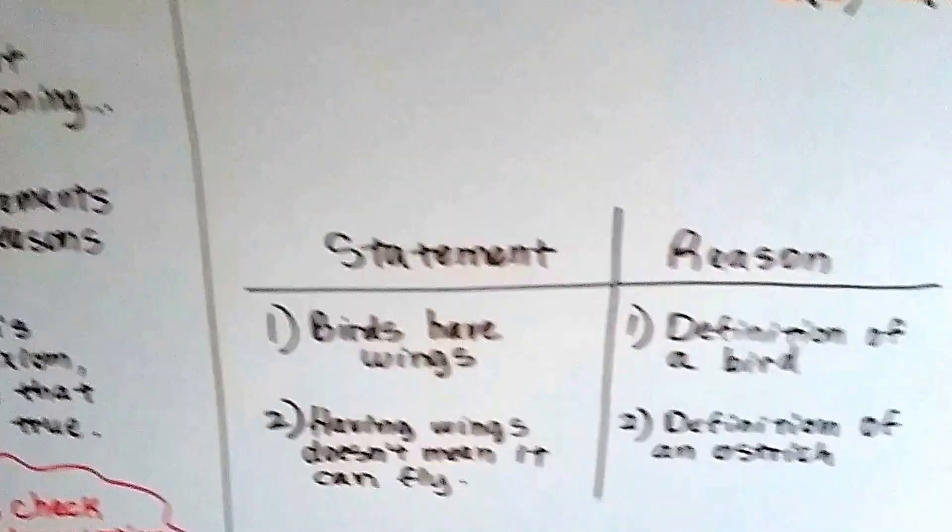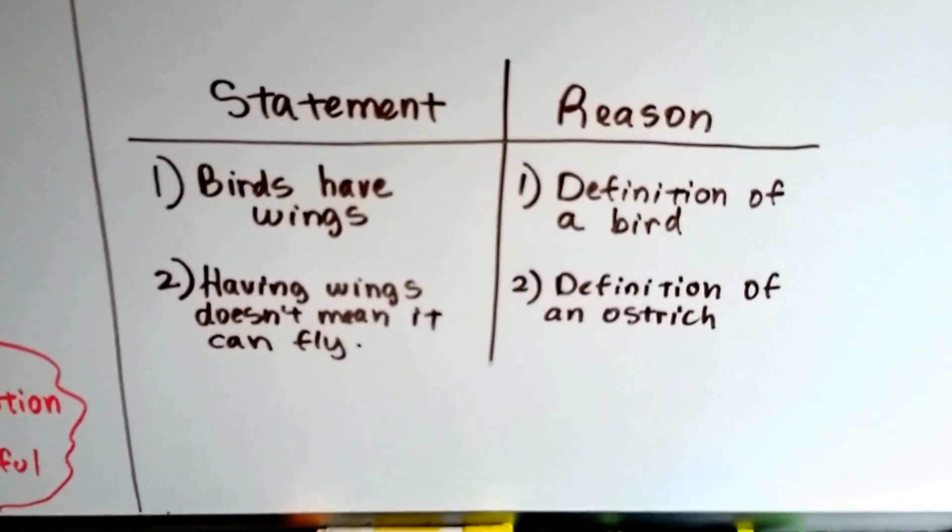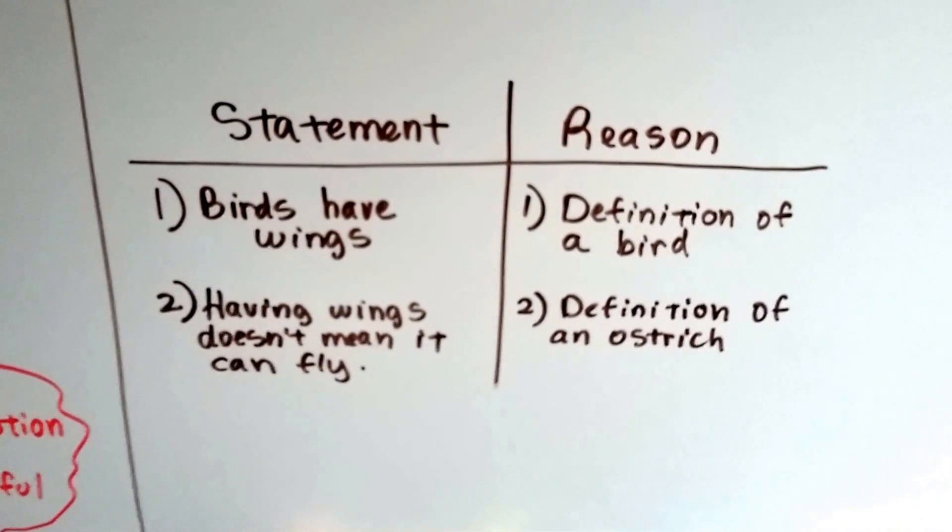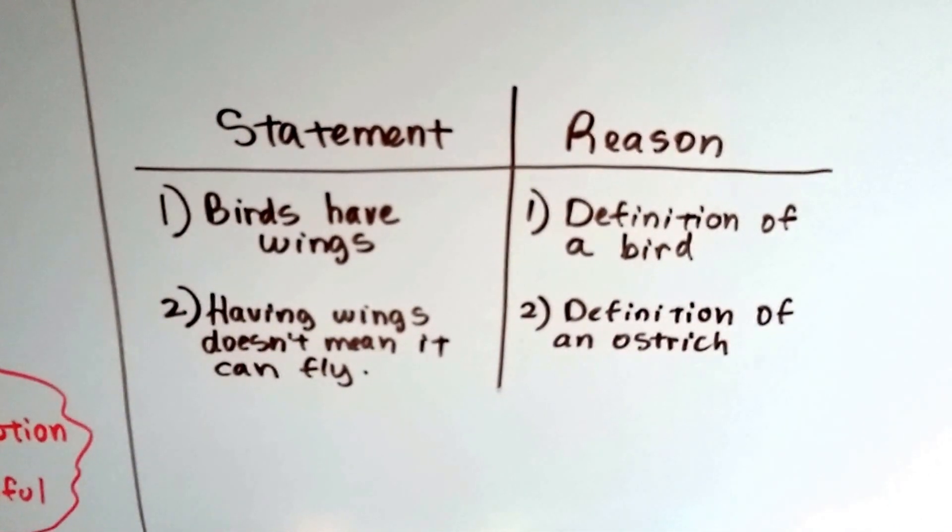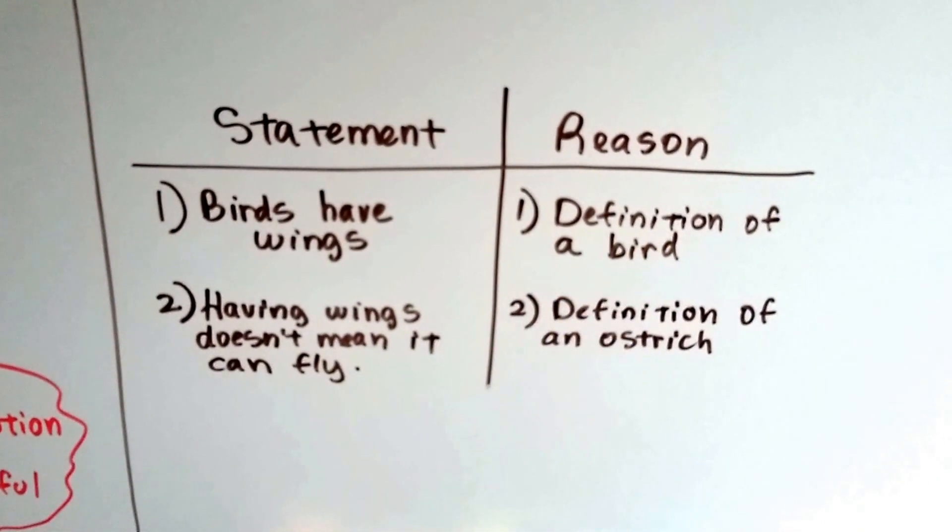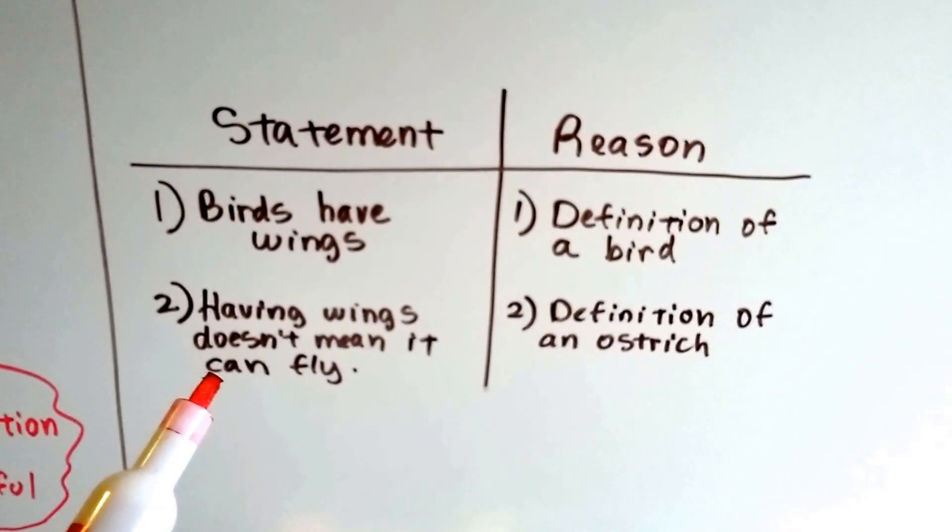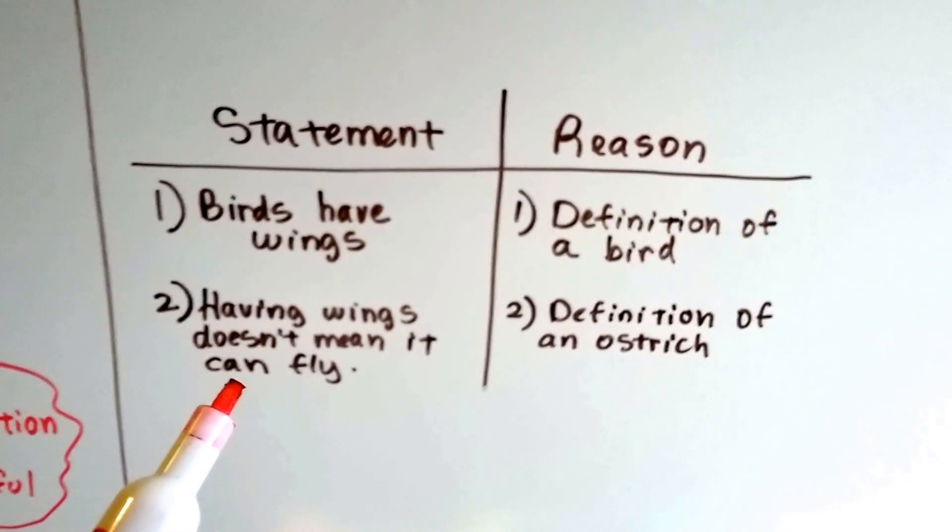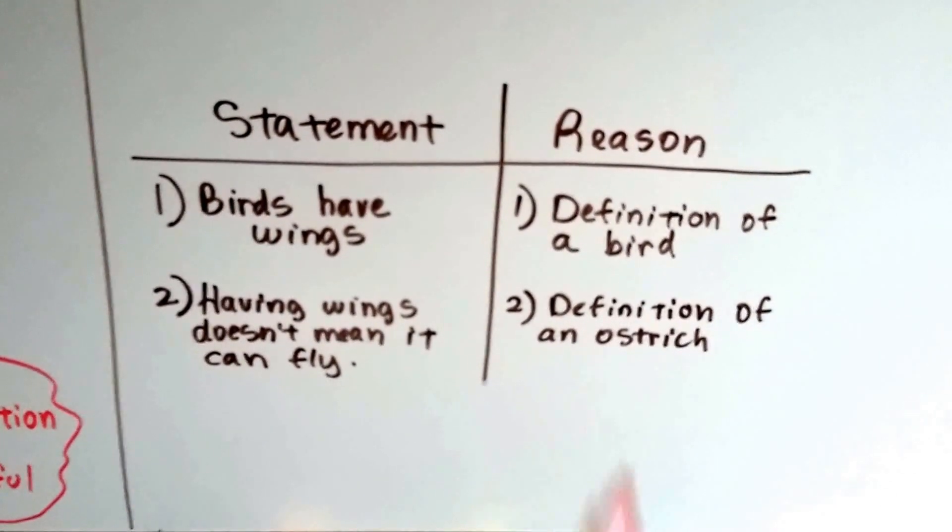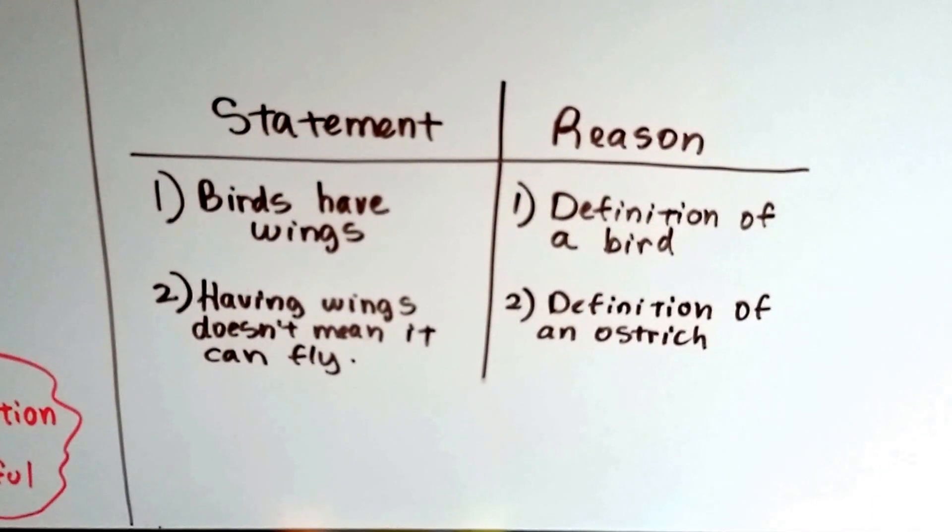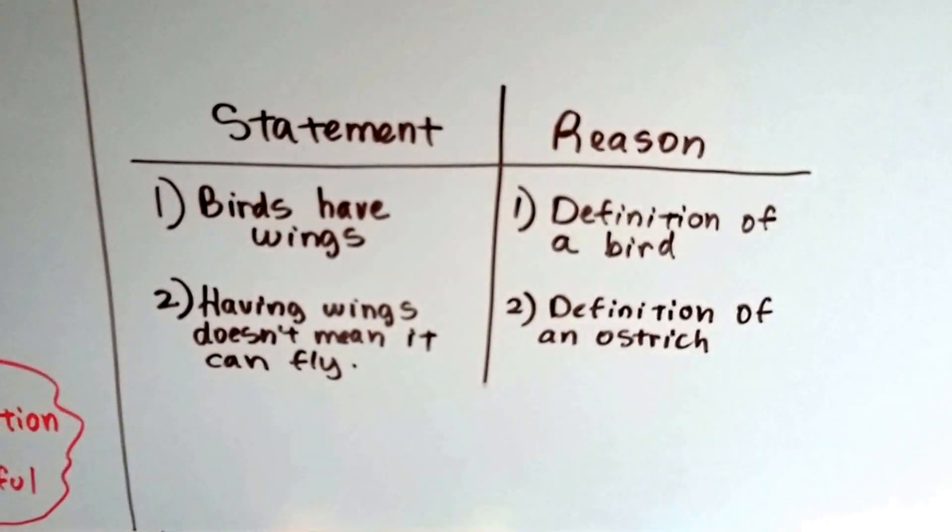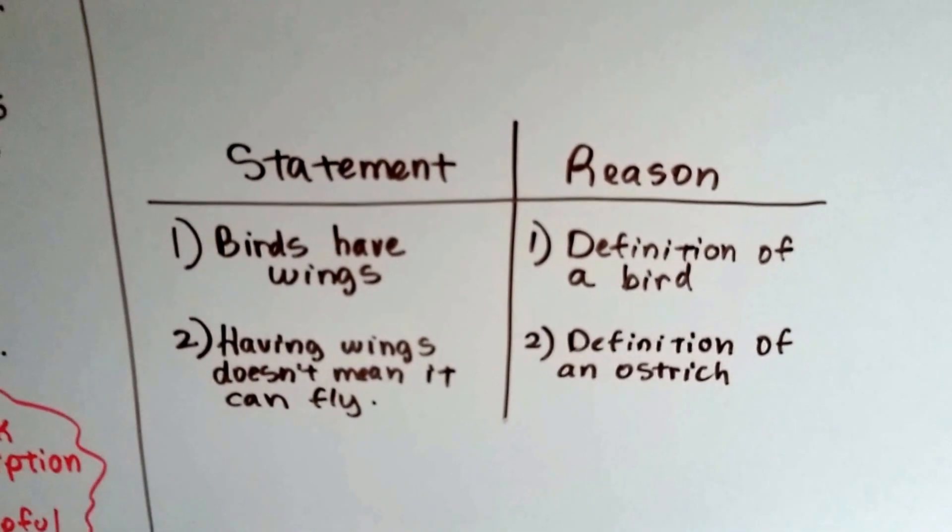So here's a little mini one I made. The statement is birds have wings. And the reason is it's a definition of a bird. You look up the definition of a bird and it's going to say that it has wings. Then the next statement is having wings doesn't mean it can fly. And our reasoning is definition of an ostrich. You look up an ostrich and its definition will tell you it's a bird that doesn't fly. So that would be a proof.